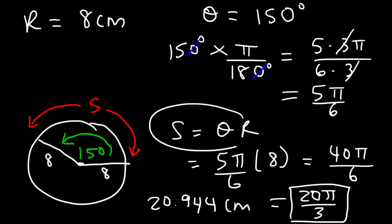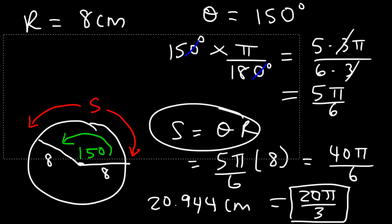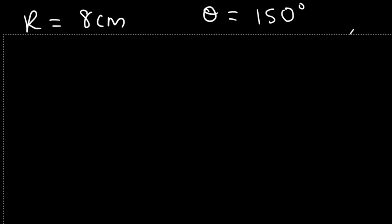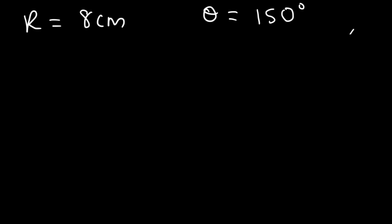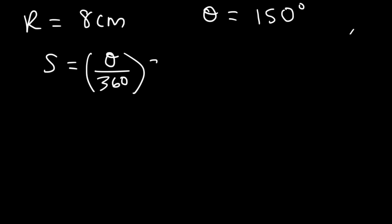If you don't want to convert to radians, there's another equation you can use while keeping your angle in degrees. The arc length equals the angle in degrees divided by 360, times 2πr, where 2πr is the circumference of the circle.